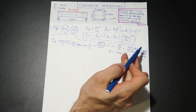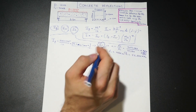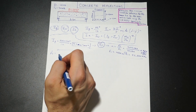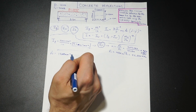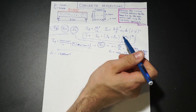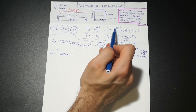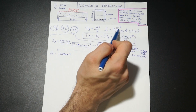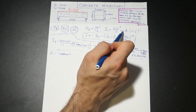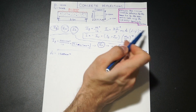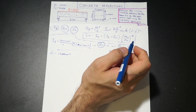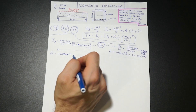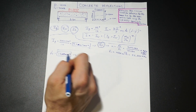So we have our N and our IG so far. We also need our area of steel. We have four 20M bars. A 20M bar is 300 mm squared, so we have 1,200 mm squared of flexural steel in our beam.